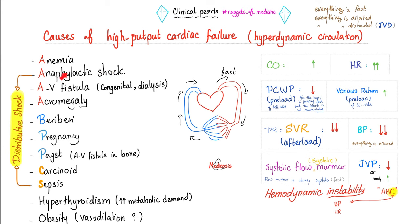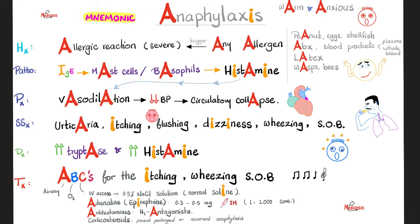Anaphylactic shock is one of the causes of high output cardiac failure, just like Paget disease, which we have discussed before. Why? Because you have vasodilation — everything is moving real fast. I call it: everything is fast, everything is dilated, everything is distended. The heart is pumping blood faster, so cardiac output is high. You can call it high output cardiac failure or hyperdynamic circulation. My patient is warm and anxious.